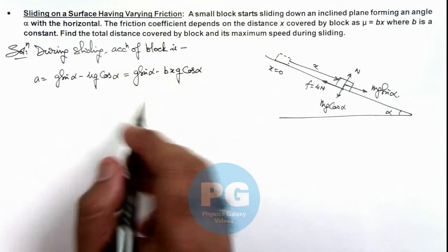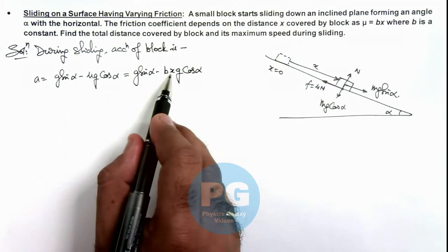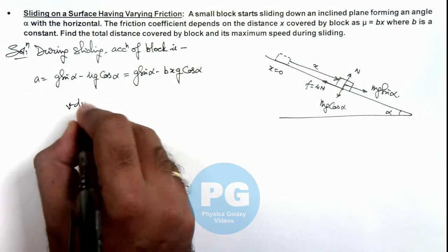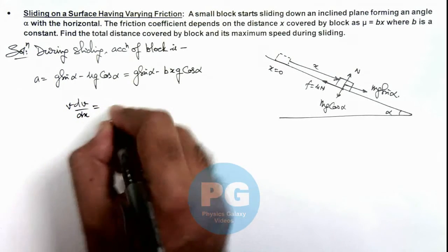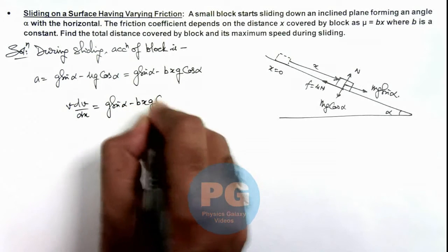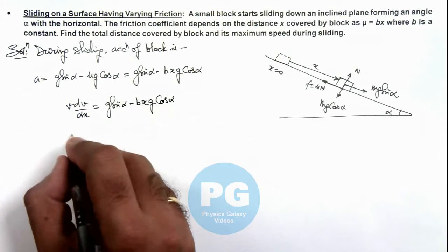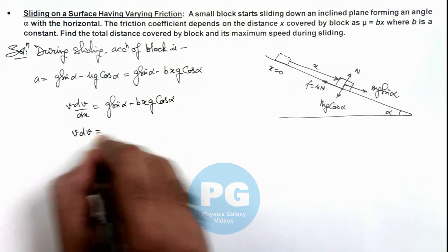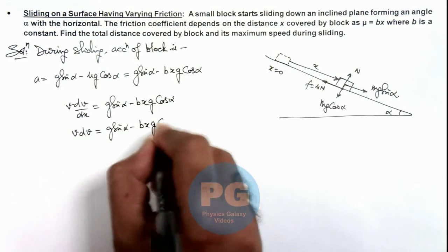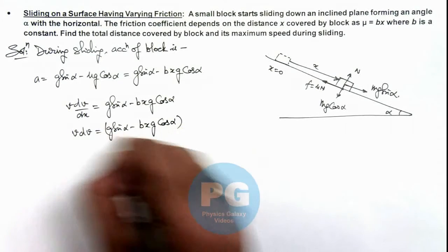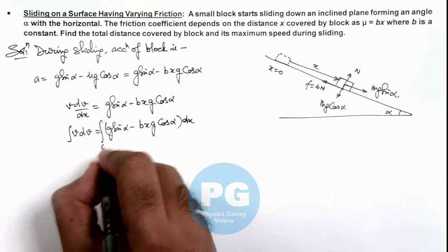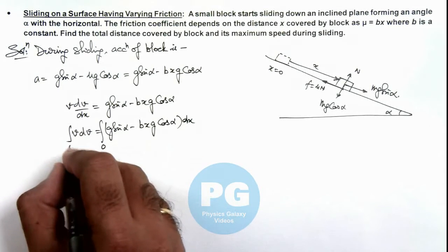Since acceleration is a function of x, we can write acceleration as v dv/dx. So v dv/dx equals g sine alpha minus bxg cosine alpha. This can be written as v dv equals (g sine alpha minus bxg cosine alpha) dx. We integrate both sides, with the initial condition that at x equal to zero, the speed was zero.